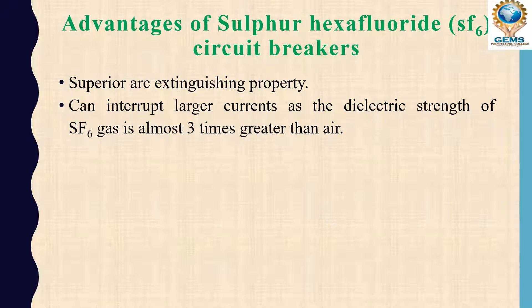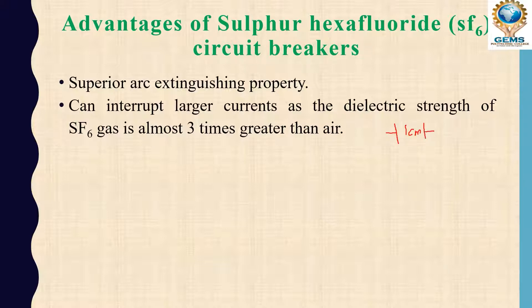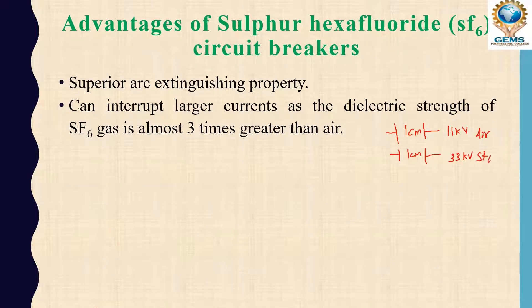It can interrupt large currents as the dielectric strength of SF6 gas is almost three times greater than air. For example, in one centimeter of air, we can hold about 11 kilovolts. But that same one centimeter of SF6 gas can hold 33 kilovolts. This means for the same voltage, SF6 requires much less spacing between conductors compared to air.